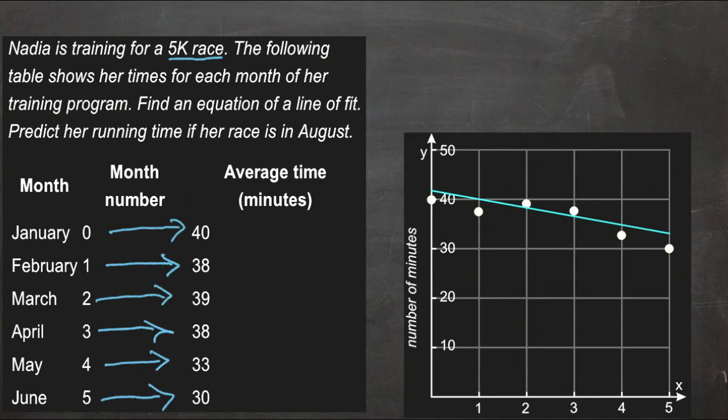We can do that by plotting these points on a graph. We're going to put the months across the bottom, and then the number of minutes that it takes her to complete the race going up the side.